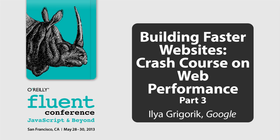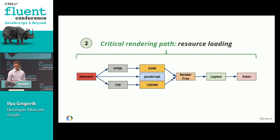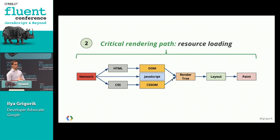We've talked about the network, which gives you some background for things like HTTP 2.0. Now let's talk about the critical rendering path. The idea is there's a certain sequence of events that needs to happen in the browser before we can paint something to the screen — put some pixels on the page. We're going to go through it and try to understand what the bottlenecks are along the way.